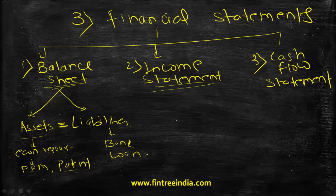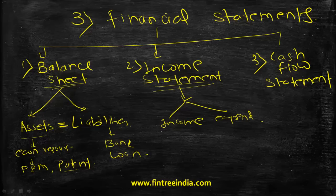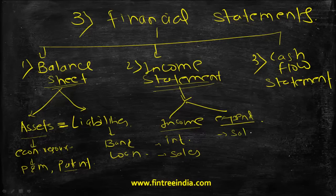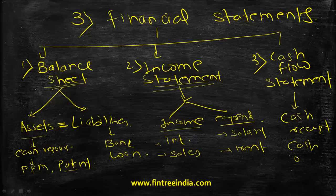The next important statement is called the income statement. It basically contains all the income and expenditure that a firm has made during the year. Examples of income include interest received or sales made by the firm. Examples of expenditure include salary paid or rent paid. Finally, the cash flow statement is all about cash receipts and cash outflows — what amount of cash has been received and what amount of cash has been spent during the year.